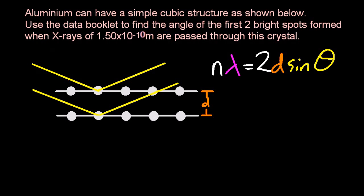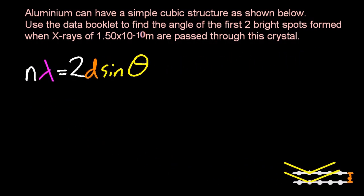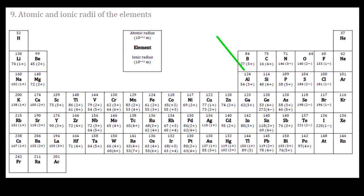So setting n equals 1 for the first bright spot, multiply that by the wavelength, twice times - well there's the radius of the aluminum atom, so I'm going to need the diameter d, so I'm going to need to double that.